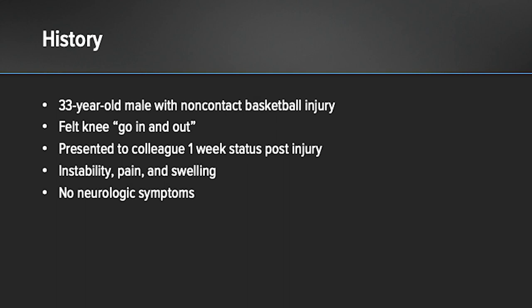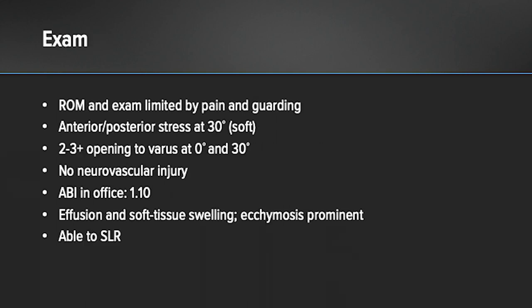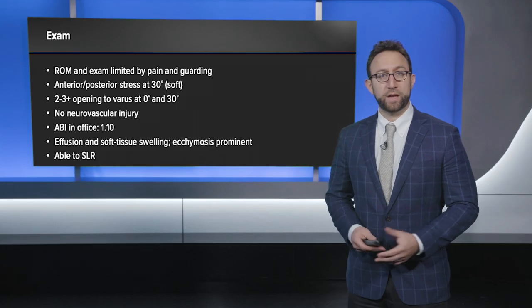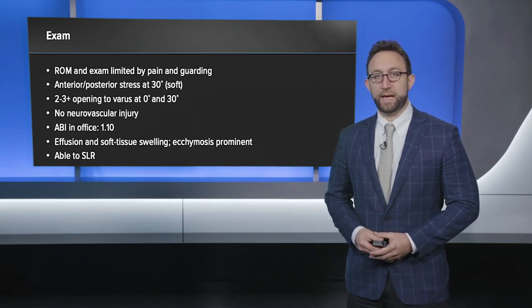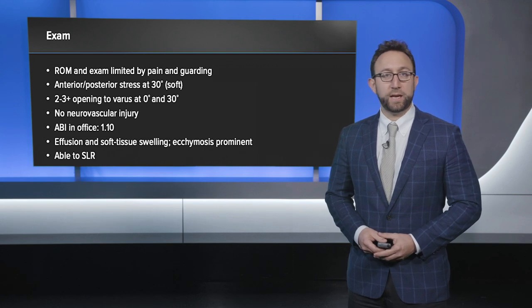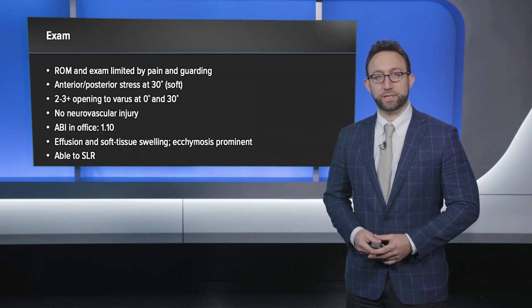He denied any neurological symptoms. On examination, he had range of motion limited by pain and guarding. His anterior-posterior stress at 30 degrees was quite soft. He had two to three plus opening to varus stress at zero degrees and 30 degrees of flexion. He did not demonstrate any recurvatum or generalized ligamentous laxity, and he had no neurovascular injuries.